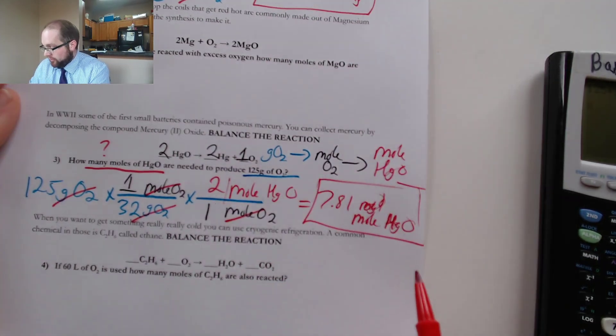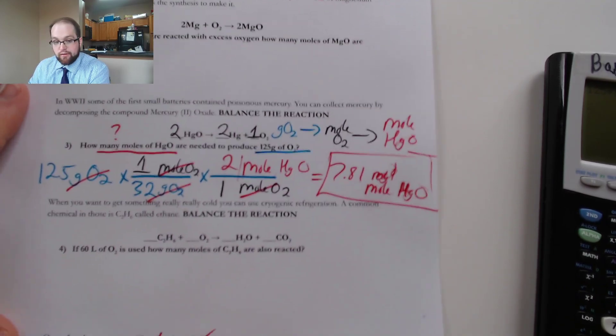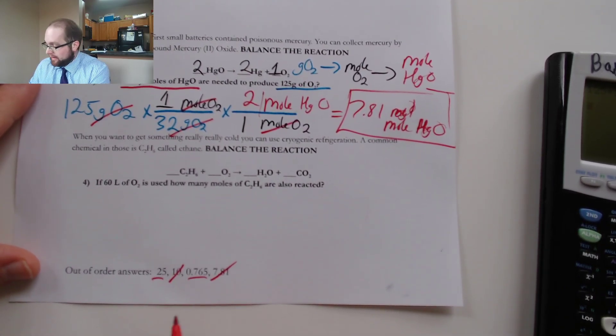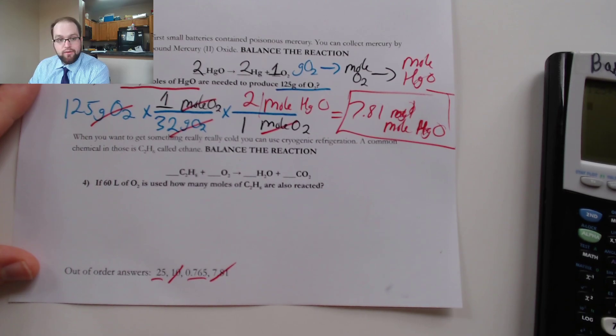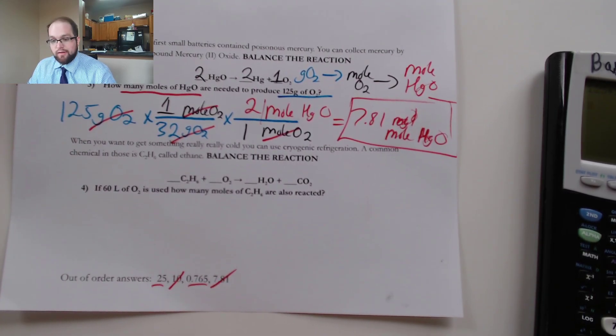Alright, why don't you try out two and four on your own as a little bit of extra review. Both the answers are down at the bottom to help you and then once you're done with this we can move on to three step stoichiometry. Take your time, don't forget to ask questions, and you've got this.